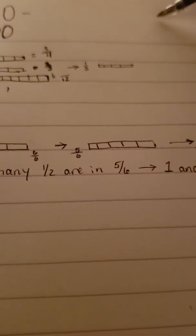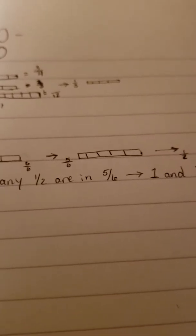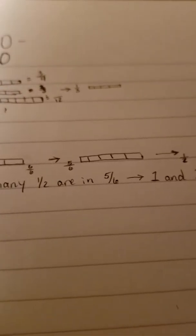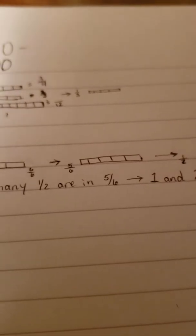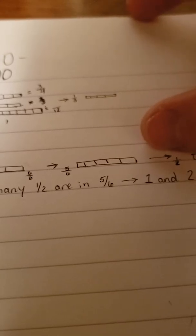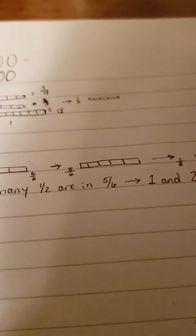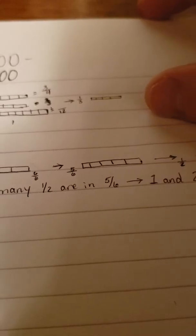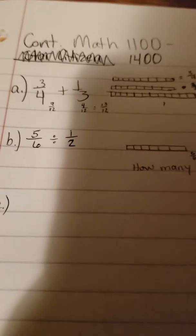A Cuisenaire rod is a three-dimensional object. It'll be one color — like green or red — it could be an assortment of colors, and its value in base 10 for one of the biggest rods would be 10 units. All the Cuisenaire rods express their differences in the colors, so a rod that has eight units would be a different color than the one that has 10. What we're doing here is drawing and modeling those Cuisenaire rods.